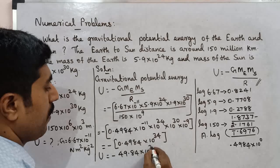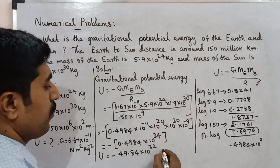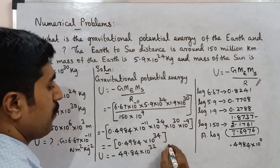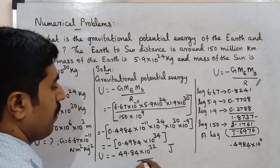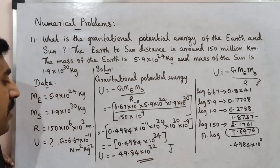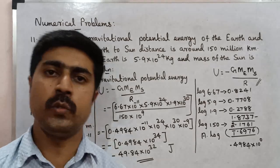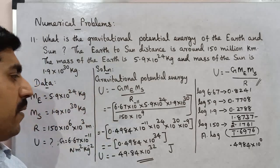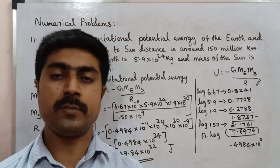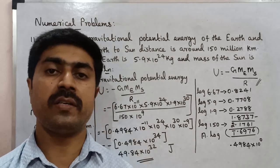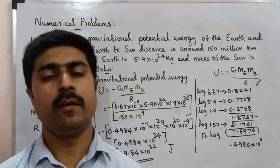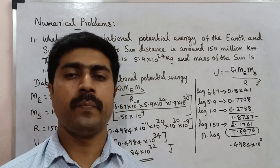Power 32 joules. So the gravitational potential energy is approximately 0.4984 into 10 power 32 joules. Very simple problem. All the best.